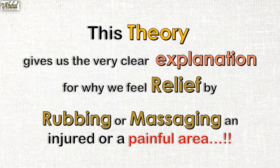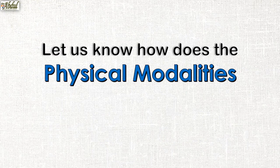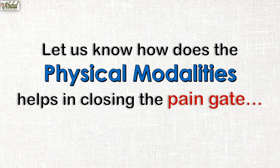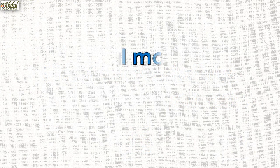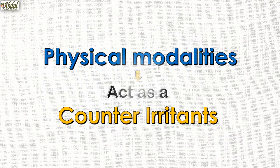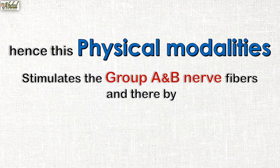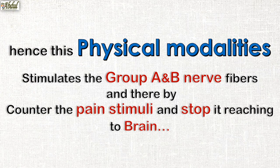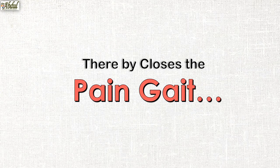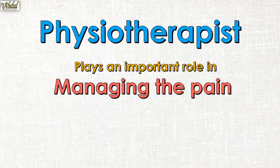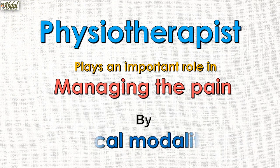Now let us see how physical modalities help in closing the pain gate. Physical modalities act as a counter irritant and stimulate the group A and B nerve fibers. As we have seen, these nerve fibers are myelinated, fast conducting, and have a larger diameter — they are very fast in conduction and thereby counter the pain stimuli, stopping it from reaching the brain, and thus closing the pain gate.